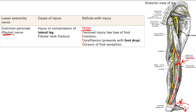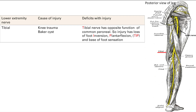Finally with the common peroneal nerve, you get loss of sensation on the dorsum of the foot. Just remember the fibula — there's a tibia and a fibula. The tibial nerve is the complete opposite of the common peroneal nerve, so you can deduce everything from knowing the common peroneal.